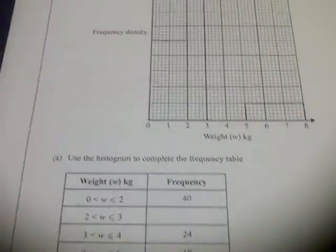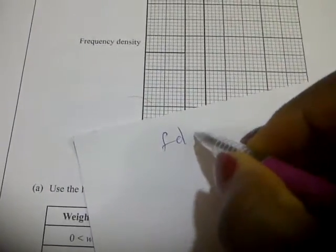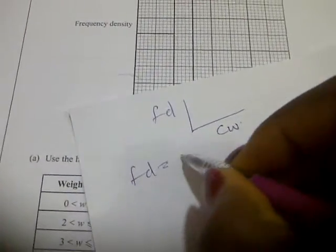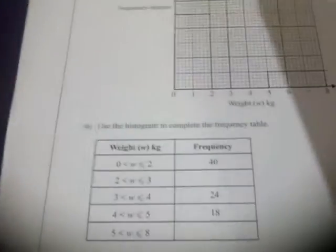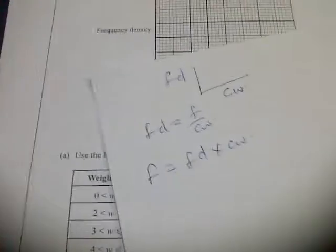Use the histogram to complete the frequency table. Now remember that for histograms, we plot frequency density on the y-axis and class width on the x-axis. Frequency density is the same as F over CW. Here we have frequency density, we are looking for frequency to complete this table. So it will be frequency equals FD times CW. This is the formula we use for the table.